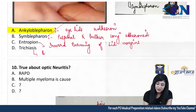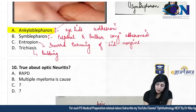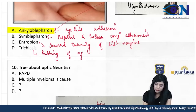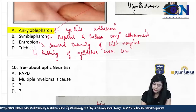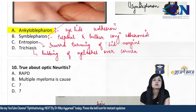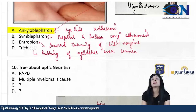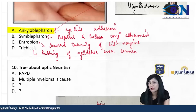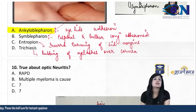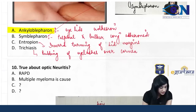Trichiasis is the rubbing of the eyelashes over the cornea. When we have rubbing of eyelashes over the cornea, then this is called as trichiasis. And even if one eyelash rubs the cornea, it is sufficient enough to qualify as a case of trichiasis.